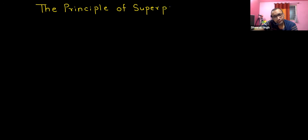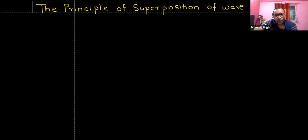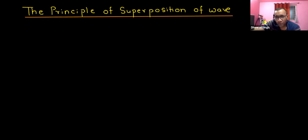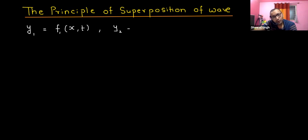Write down the principle of superposition of the wave. Superposition is what happens when two waves meet. If y1 equals f1(x,t) and y2 equals f2(x,t), these two waves, if they meet, will give you y equals y1 plus y2.